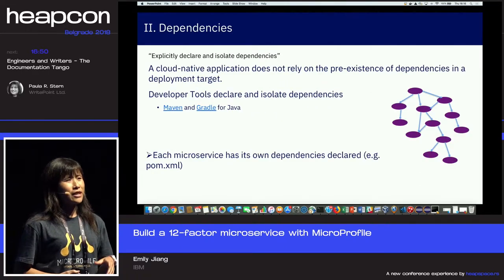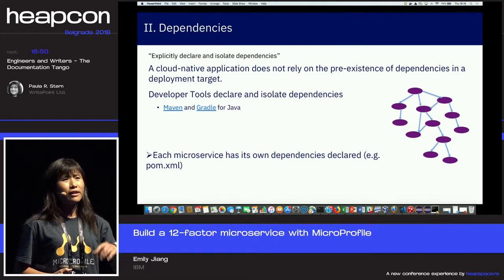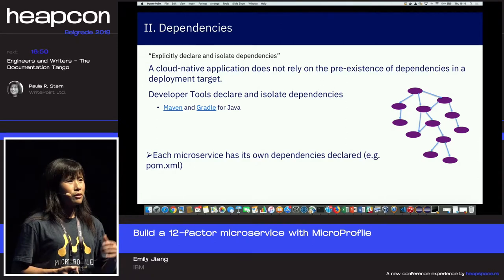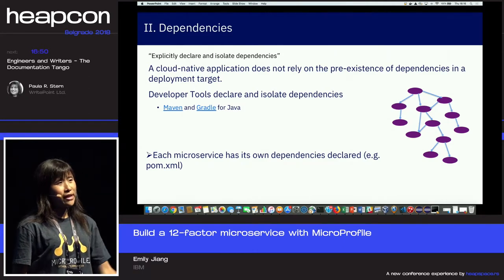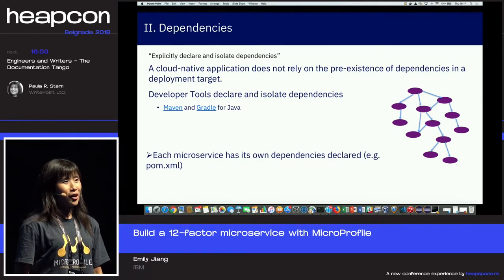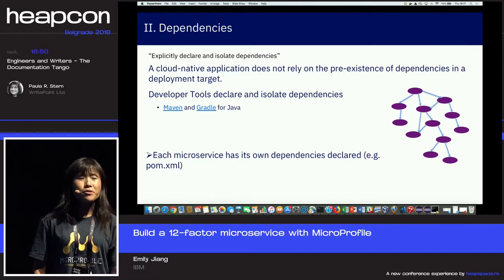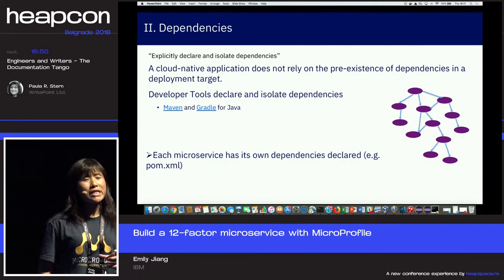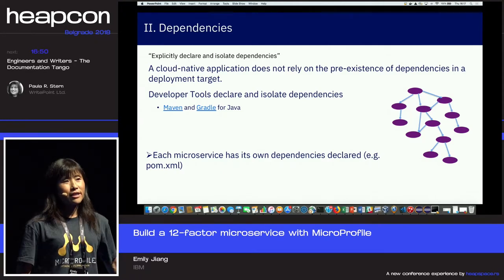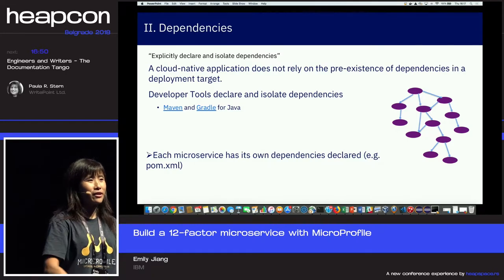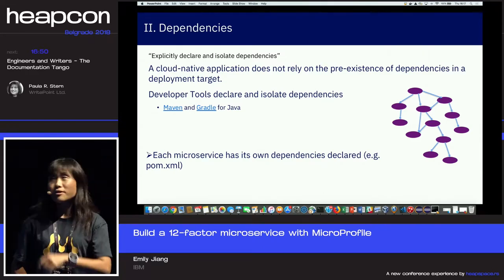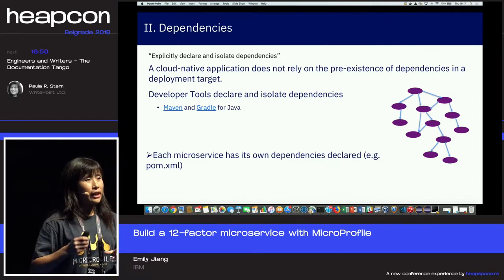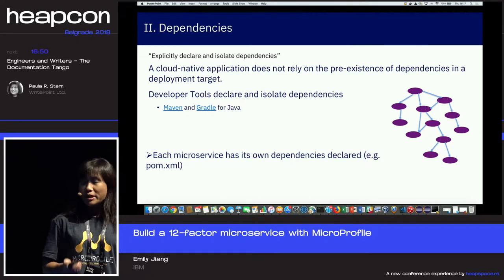The second factor is Dependencies. We talk a lot about Maven and Gradle. You should always use Maven dependency to specify your dependencies and automatically get them from Maven Central, instead of packaging third-party libraries inside your application. Once you do that you just carry that burden with you all the time. Let Maven or Gradle resolve the dependencies for you.